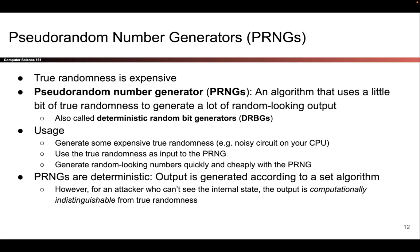What computationally indistinguishable means is that if you give an attacker some PRNG output and some true random output generated from lava lamps or some other physical source of randomness, the attacker with polynomial runtime is unable to tell which came from the PRNG and which came from true randomness. That's our goal with the PRNG: a piece of code that can efficiently generate numbers that look as good as random, even though they came from a deterministic algorithm.